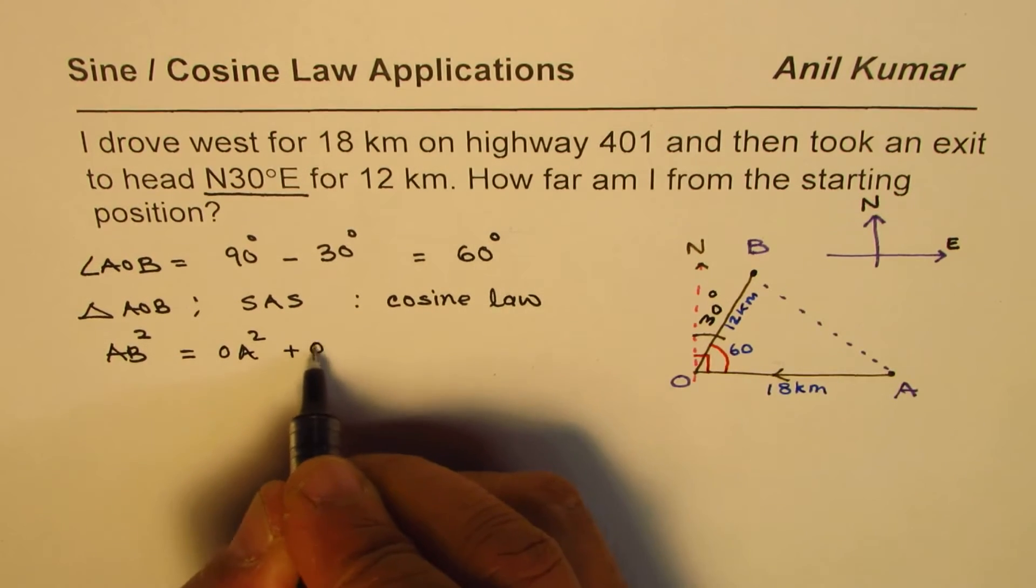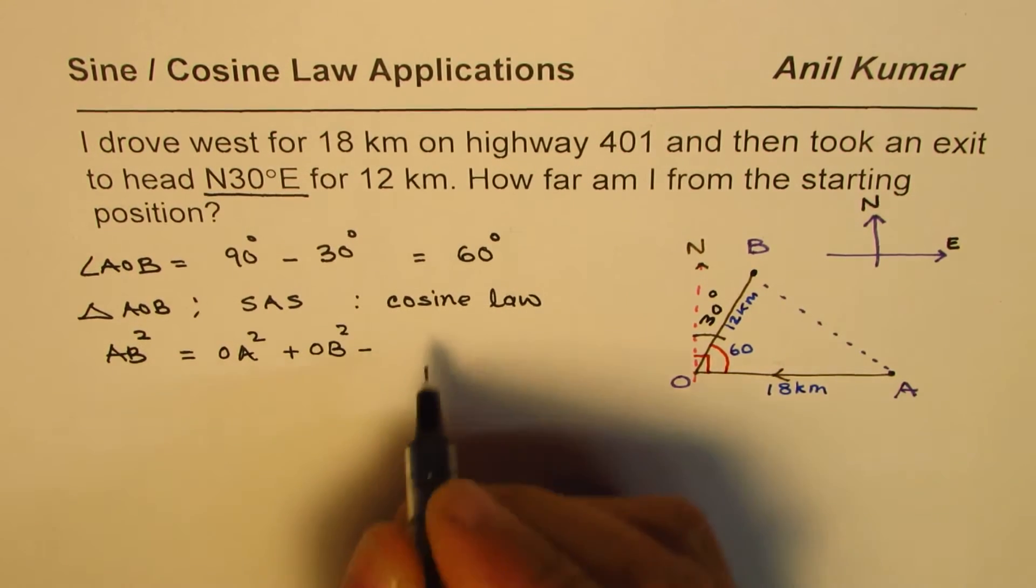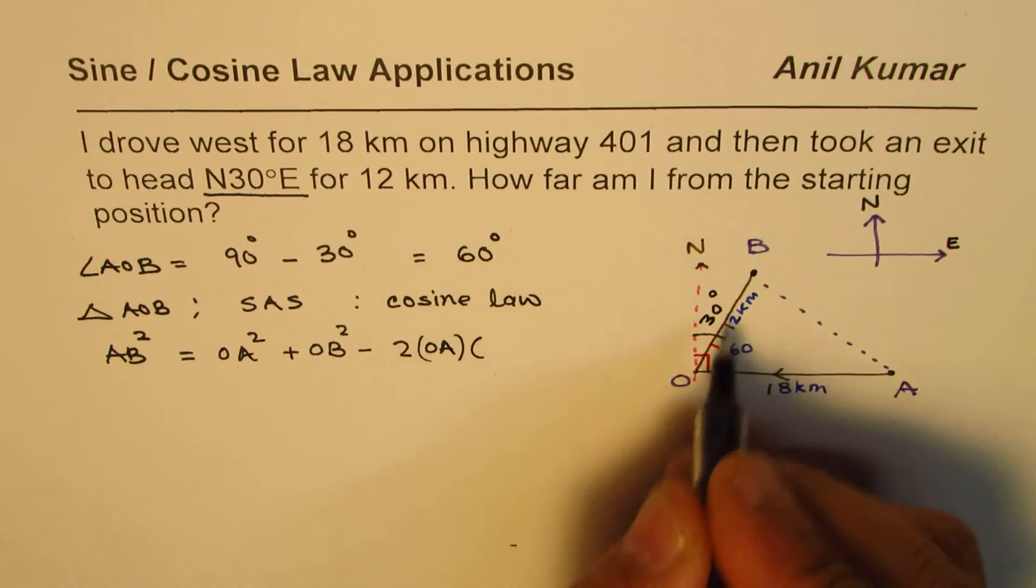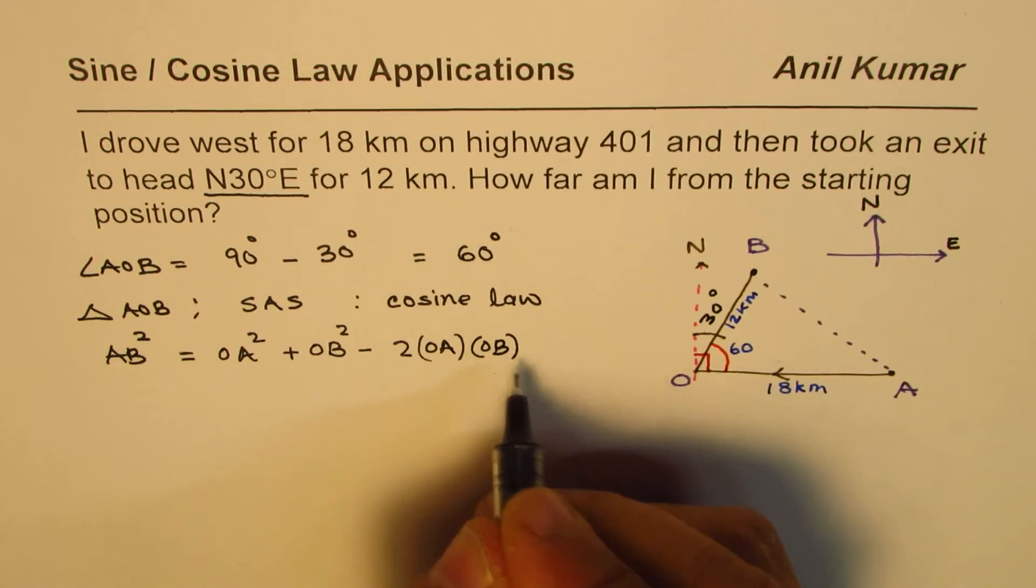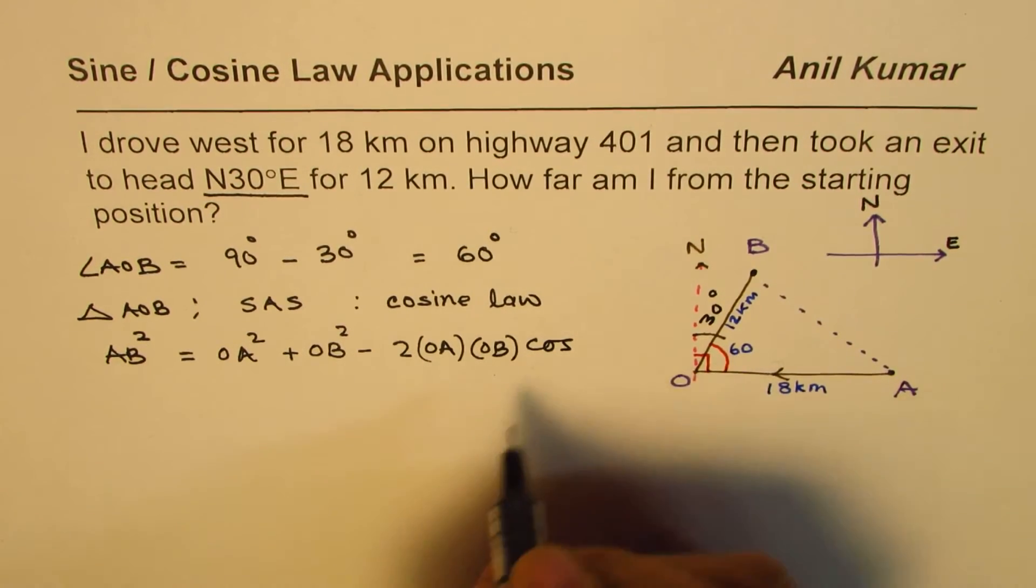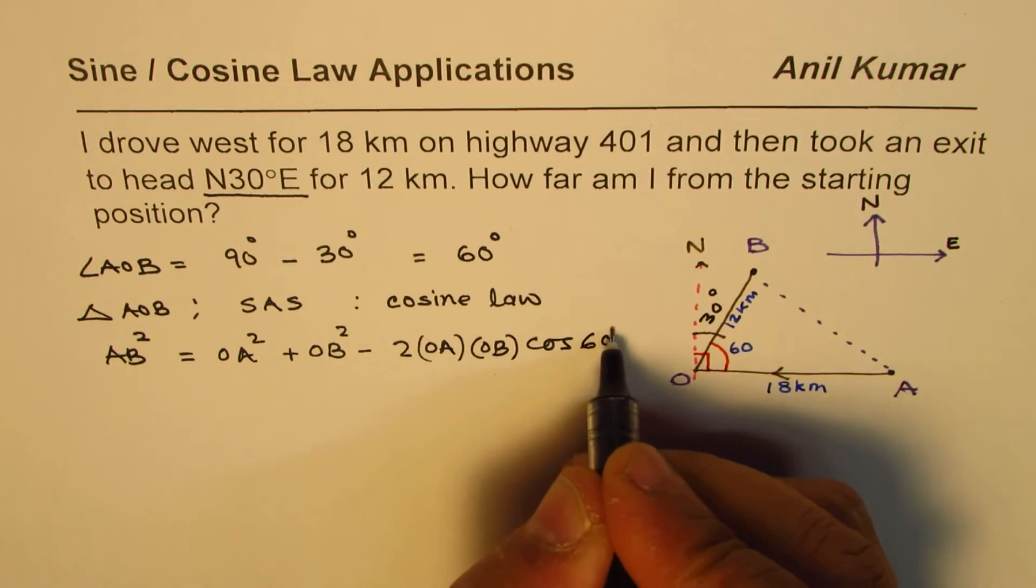Minus 2 times OA, this side, times OB times, since it is called cosine law, cos of included angle which in our case is 60 degrees.